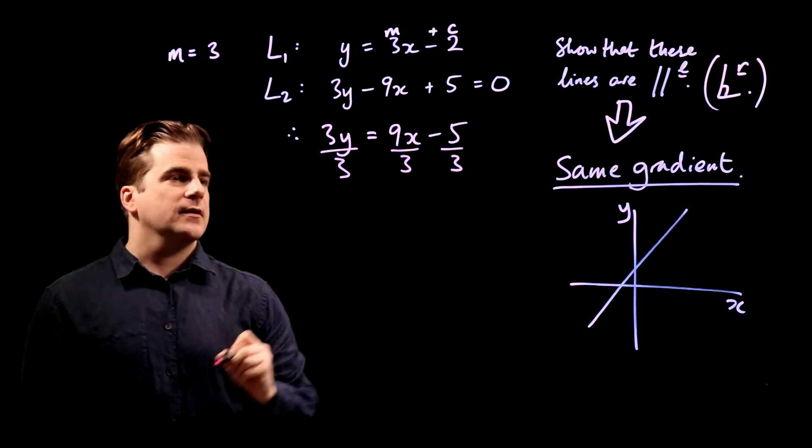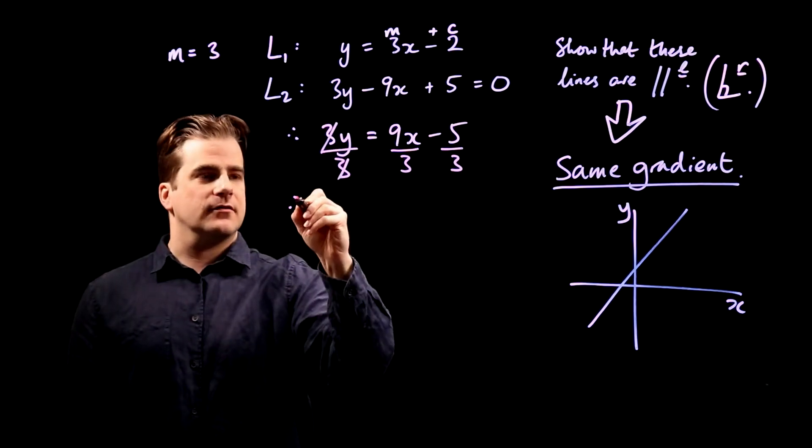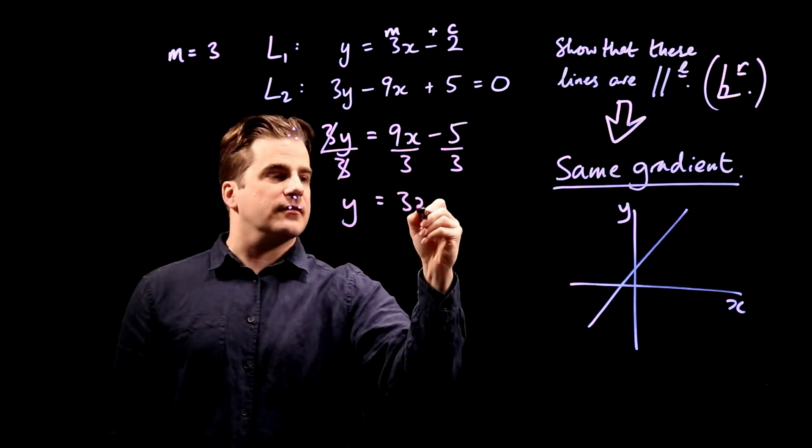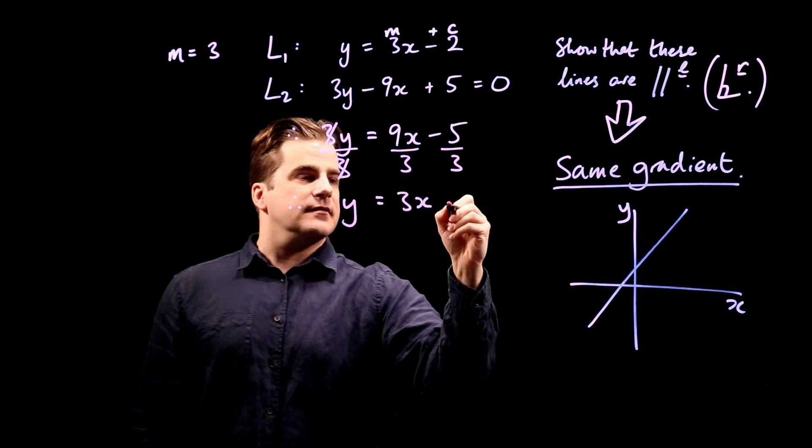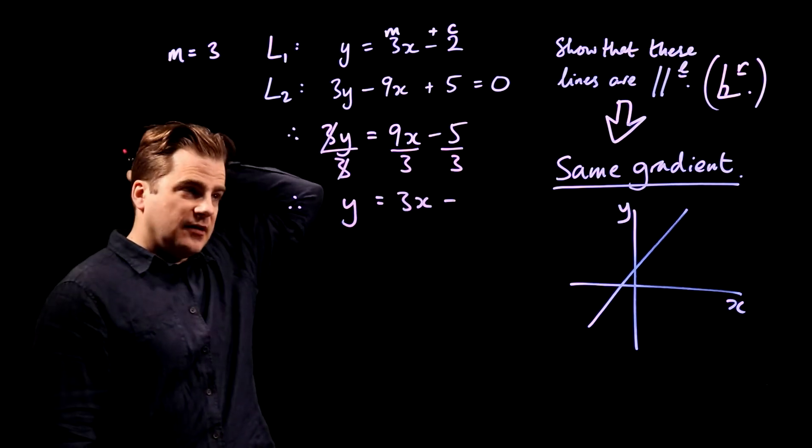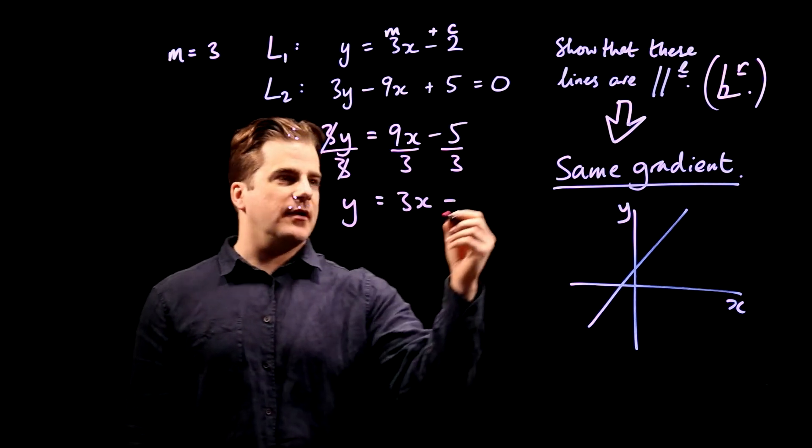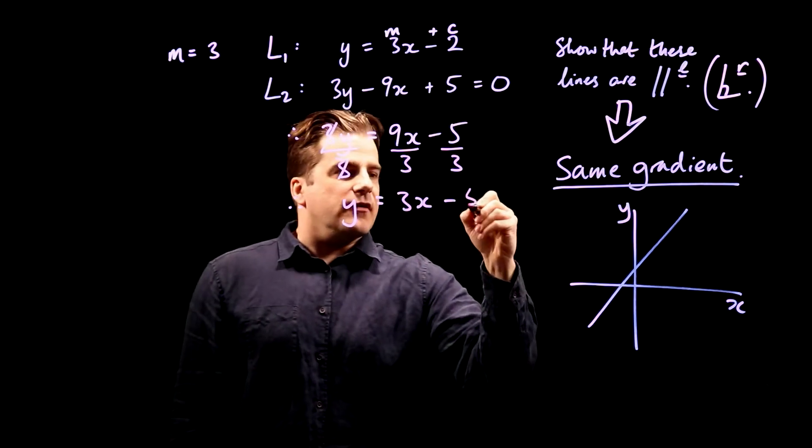So 3s cancel, and we get y equals 9 divided by 3 is 3, and I could leave it as 5 over 3. Doesn't really matter. We've achieved the objective. Yeah, I'll leave it as 5 over 3.